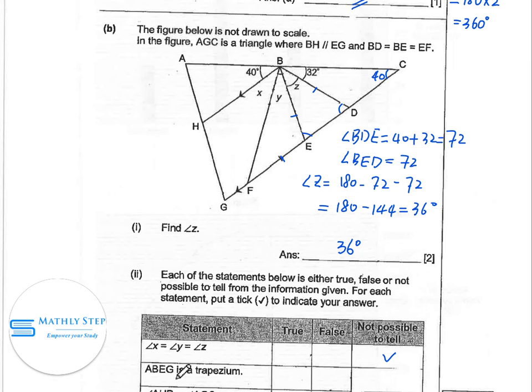ABEG is a trapezium, which means that BE is parallel to AD. If BE is parallel to AD, then this angle is 72, this angle will also be 72. But we never knew that this angle is 72. The question didn't give to us.